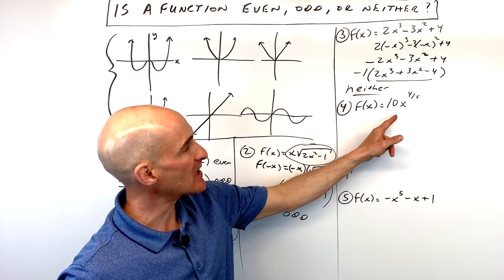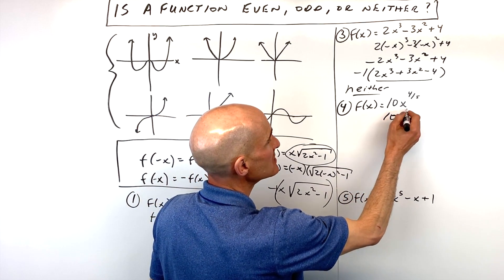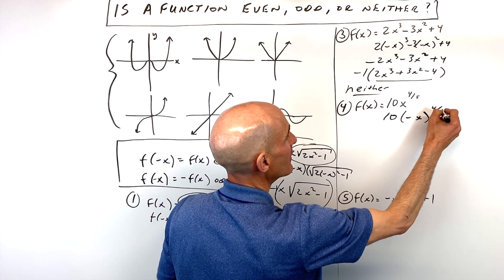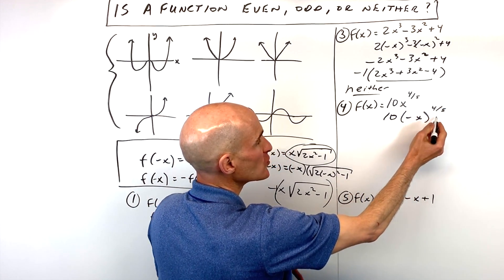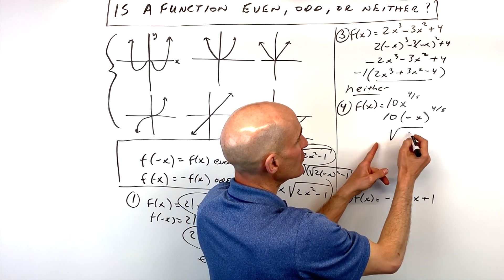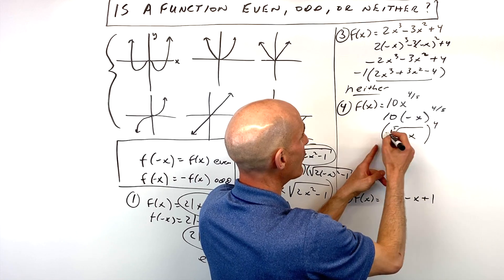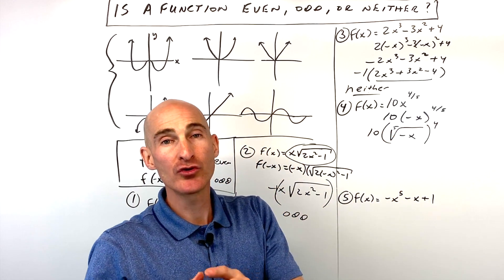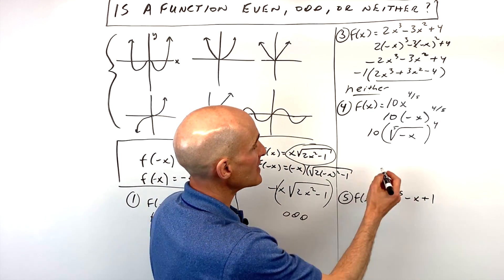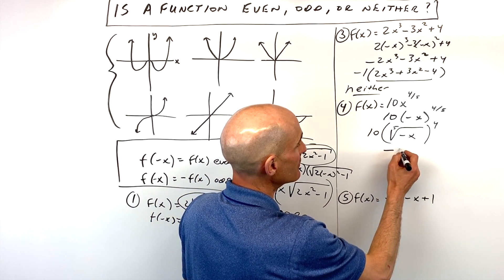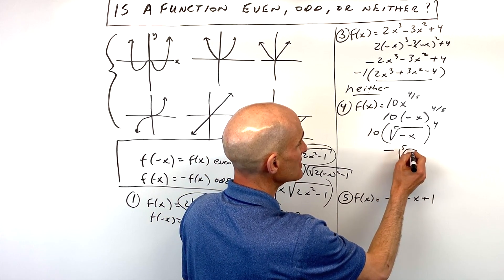For number 4, we've got some fractional exponents, rational exponents. Same process. We're replacing x with negative x. And remember, to switch this into radical form, the denominator is the root. The numerator is the power. But think about it. When you have the cube root, or the 5th root, or the 7th root of a negative number, that's just going to be the same as negative whatever this quantity is here.